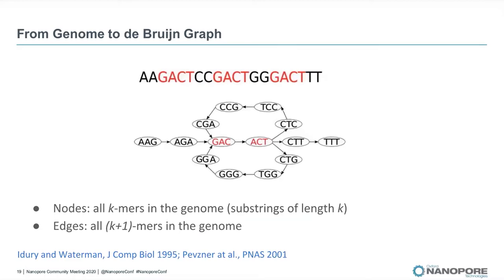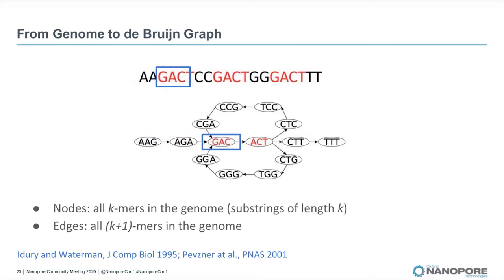Here is how we can construct such a graph. First, I will explain how to construct a graph from a complete genome, and then how to use this for the genome assembly problem. In this graph, we consider substrings of length K in the genome, called K-mers — in this example, K equals 3. For each K-mer in the genome, we put a node on the graph: AAG corresponds to one node, the next K-mer AGA corresponds to another node, and we put an edge between nodes if the corresponding K-mers are adjacent in the genome. But what happens if K-mers are sampled from a repetitive part? They will correspond to the same node. For example, all instances of GAC are collapsed, because they spell the same sequence.